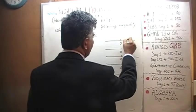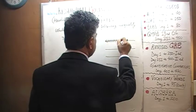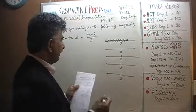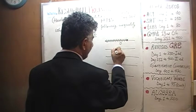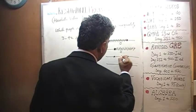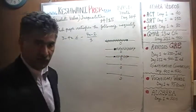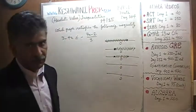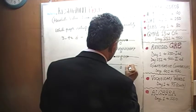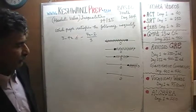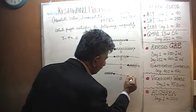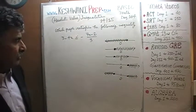Answer choice A tells us x has to be less than some positive quantity. B tells us x has to be greater than some negative quantity. C tells us x has to lie between some negative quantity and some positive quantity, though not necessarily symmetric around zero. D tells us x has to be greater than some positive quantity. E tells us x is either less than some negative quantity or greater than some positive quantity.